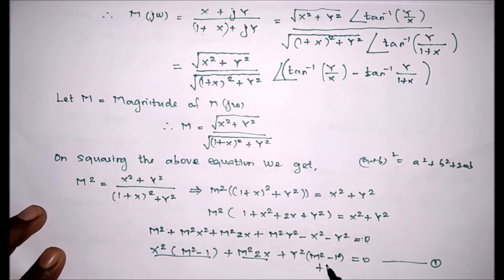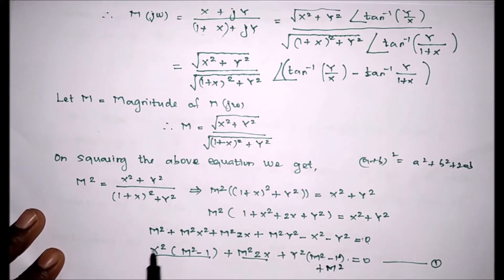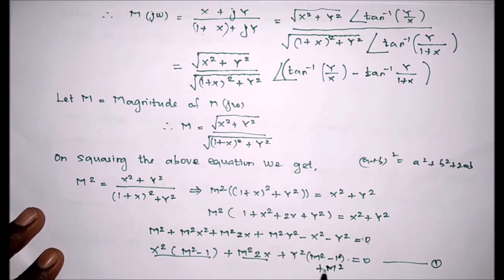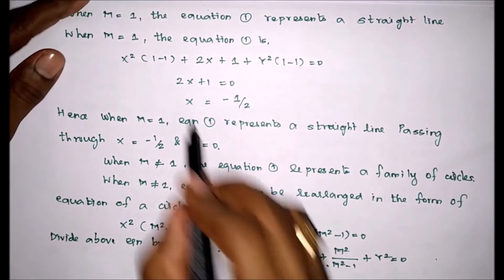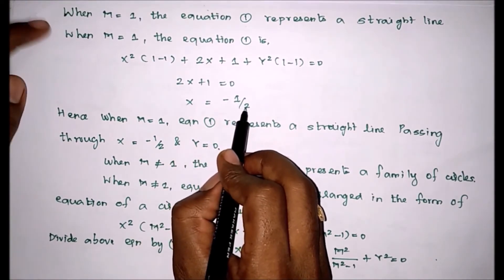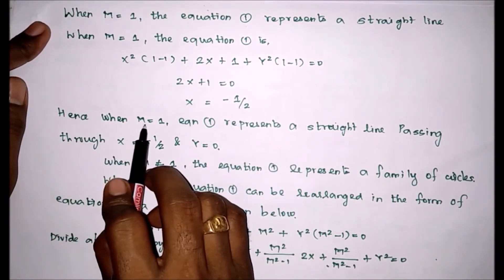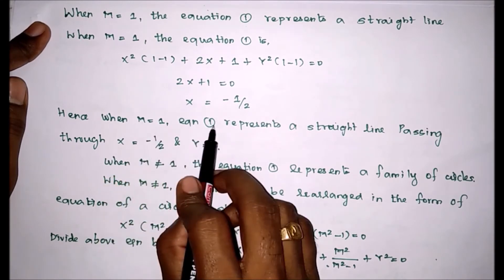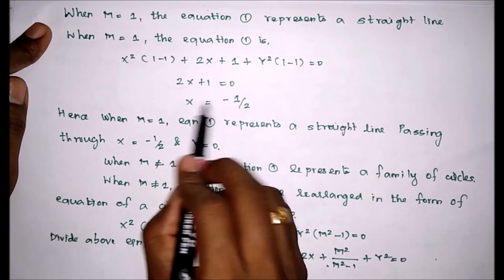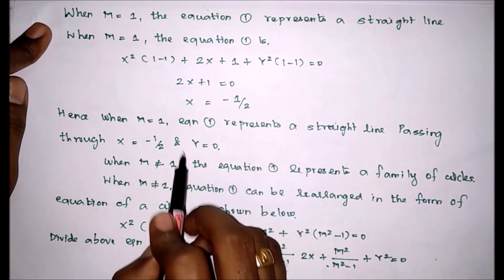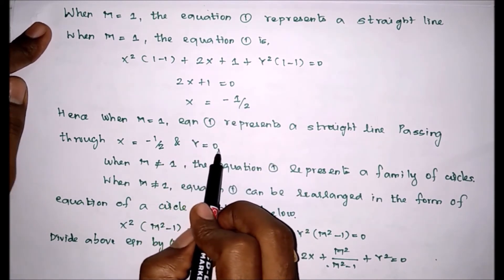From equation 1, if we substitute m equal to 1, the m squared minus 1 coefficients become 0, leaving 2x plus 1 equal to 0. Therefore x equals minus 1 by 2. Hence, when m equal to 1, equation 1 represents a straight line passing through x equal to minus 1 by 2 and y equal to 0.